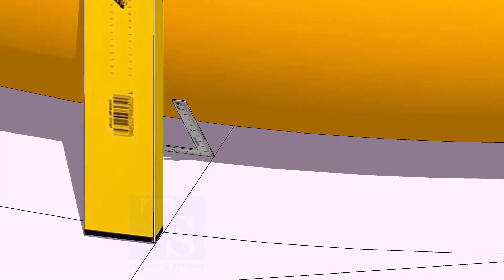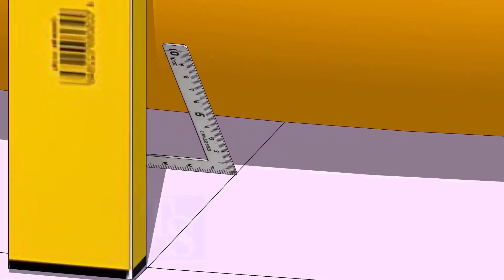At the bottom side, use a small right angle and transfer the line to the elbow on both sides.